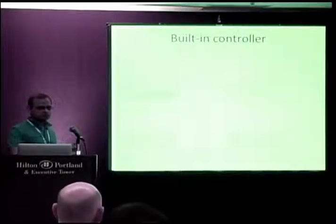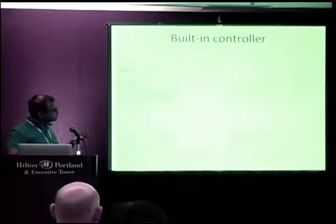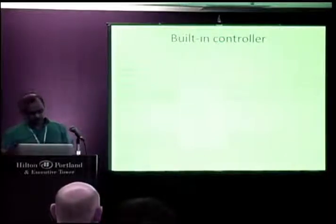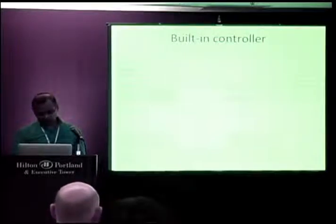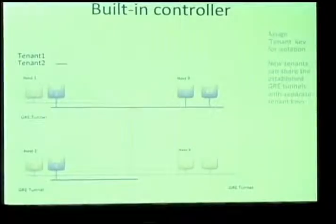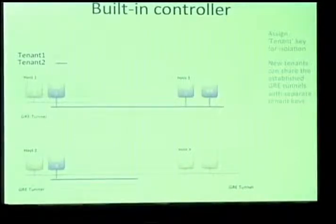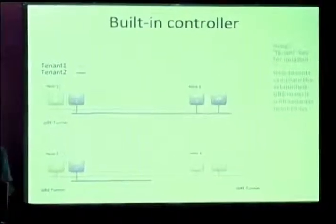GRE has an attribute called a GRE key, which is 32 bits long. We allocate a key to each network so that each network can see only packets tagged with its key. When a new network or new tenant comes in, we allocate a different set of keys. They can share the GRE tunnels already set up, differentiated by GRE keys. This operates as GRE over IP, so we only assume L3 connectivity between the endpoints — one end of the data center to another.